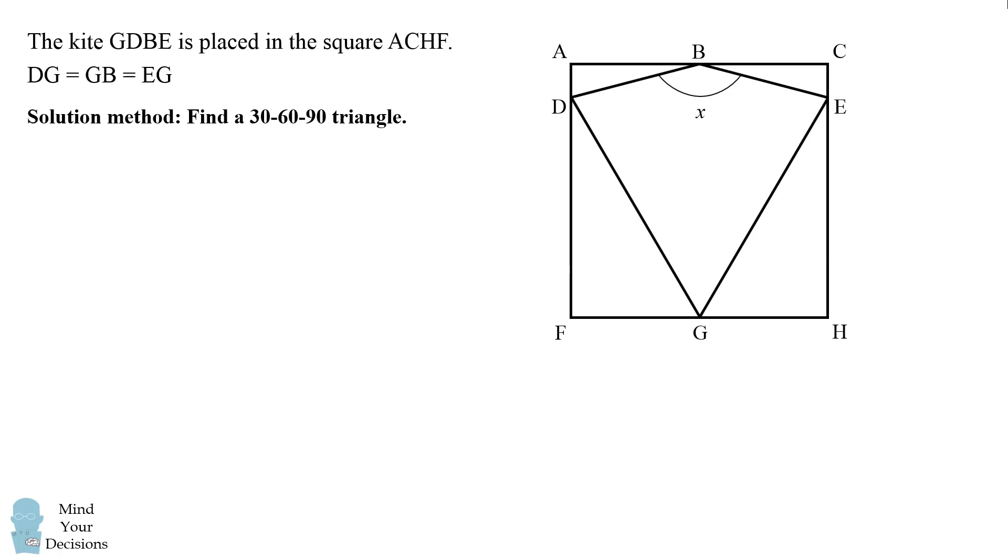So one way you can solve this problem is that after you draw the diagonals, you'll be able to find a 30-60-90 right triangle, which will allow you to figure out the angles that are necessary to get the value of X. We'll first draw diagonals DE and GB, and suppose they meet at point I.